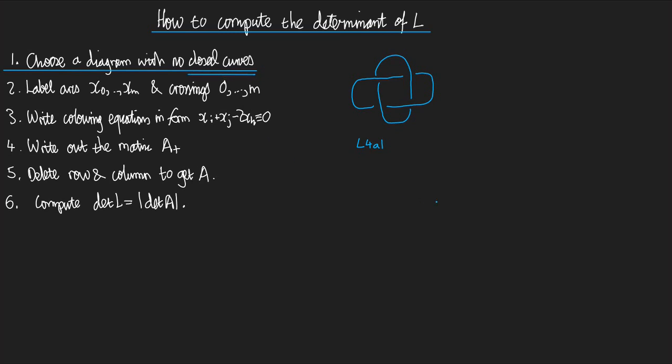What did this no closed curves business mean? It meant that you shouldn't have any arcs containing no crossings at all. There's a picture of that in the notes, so go and have a check. You can always get rid of a closed curve if there is one.